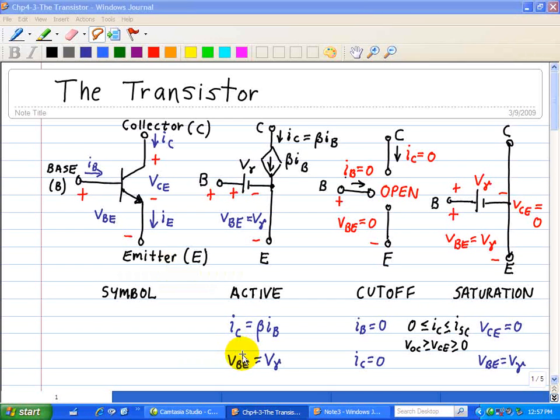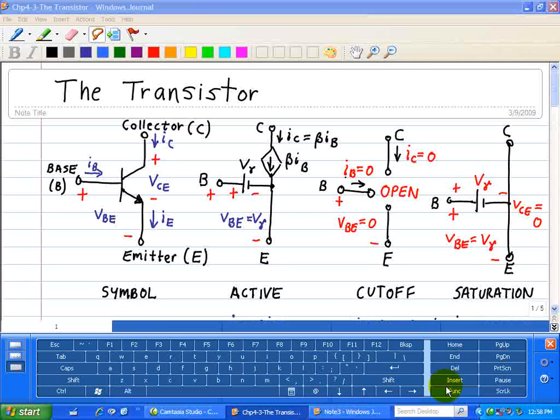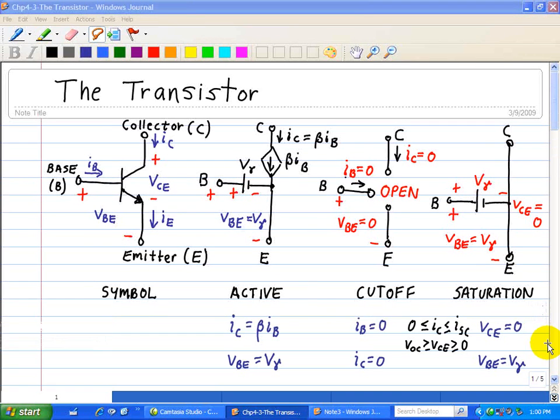The proportionality factor beta is called the forward current gain and typically ranges from 50 to 700. The constant Vgamma is called the threshold voltage, which is normally less than a volt. For silicon, it's about 0.7. For germanium, it's about 0.2. In the active mode, we have beta IB where the base current controls the collector current, and VBE must be greater than Vgamma, our threshold voltage, in order for this to operate.